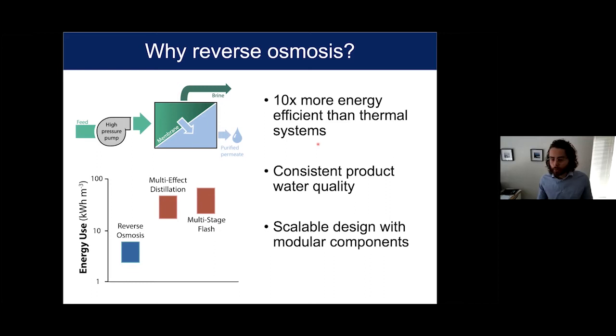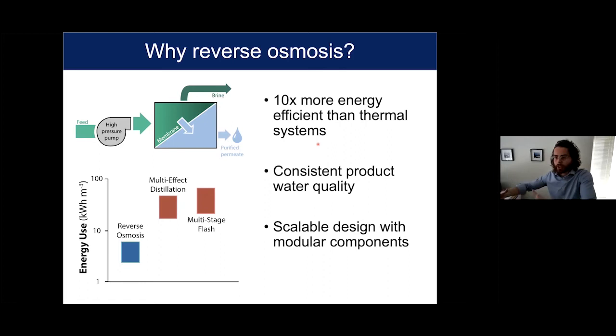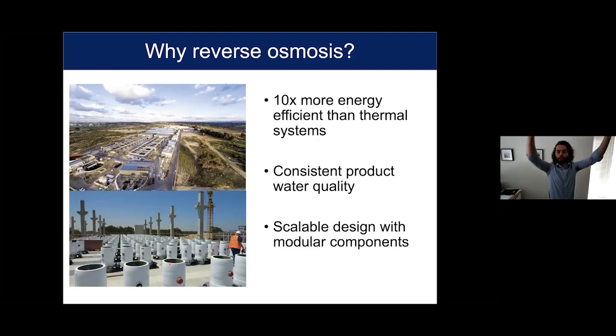RO is very efficient, produces consistent product water quality since all the water has to go through the membranes, and it's scalable with modular components. My parents in Phoenix have a little RO unit under the sink, and then you can go to Israel's Sorek desalination facility where single RO modules are so big you can pick them up with a crane and place them directly in the facility. They're expanding the membrane area enormously to produce a lot of water — it's very, very scalable.